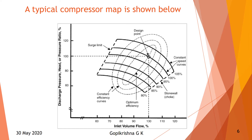On the performance map, the x-axis has inlet volume flow, and the y-axis has discharge pressure head and pressure ratio. These are the performance limits of the compressor — for a given inlet flow we will get the discharge pressure. There is a design point for 100% flow, which is the maximum design limit of the compressor. This is called the surge limit. These are the constant speed curves at 80%, 85%, 90%, 95%, and 100% speed.